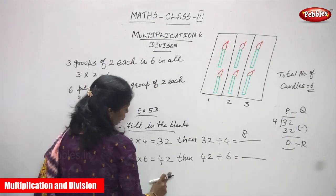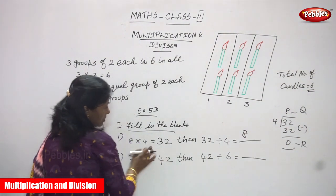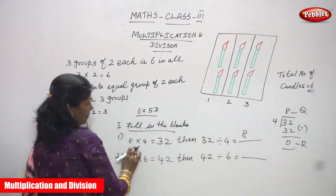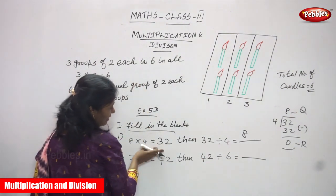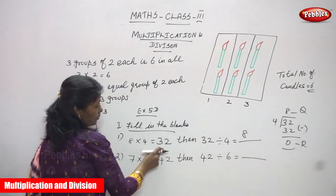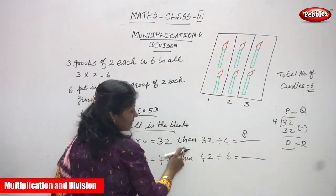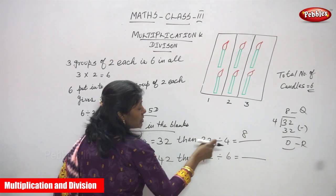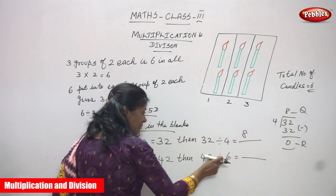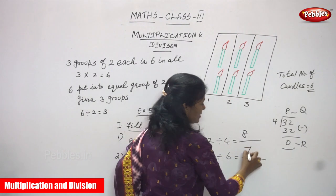Next: seven into six is forty-two, as given. Then forty-two divided by six — this is the corresponding division. Multiplication is given with its factors and product; you have to find the division. Seven into six is forty-two, so forty-two divided by six gives seven. To verify using the sixth table: six ones are six, six twos are twelve, six threes are eighteen, six fours are twenty-four, six fives are thirty, six sixes are thirty-six, six sevens are forty-two. So write seven.